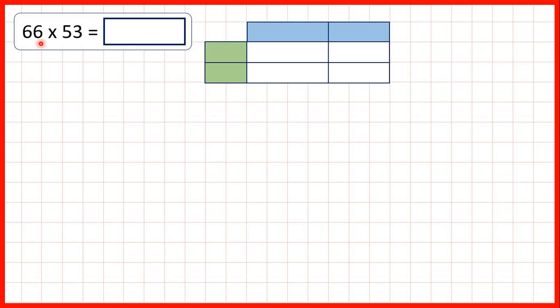Now, we need to multiply two two-digit numbers using the grid method. First, we have 66 times 53.